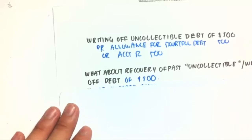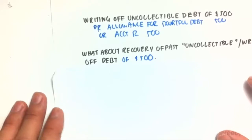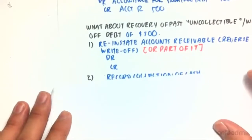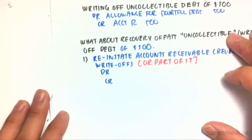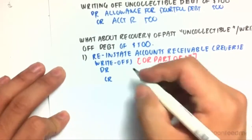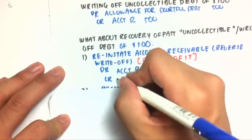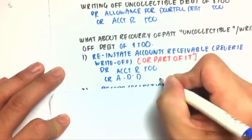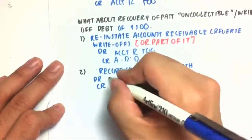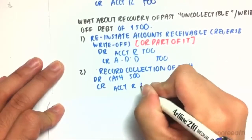What happens when we can actually recover that $500? Say after two years, the person who said they were bankrupt can repay us. Step one, we reinstate the accounts receivable by reversing the write-off: debit accounts receivable $500, credit allowance for doubtful debt $500. Then we record the collection of cash: debit cash $500, credit accounts receivable $500.